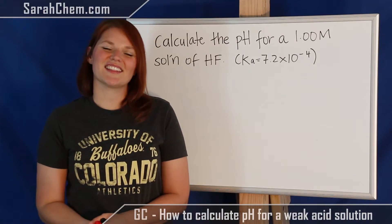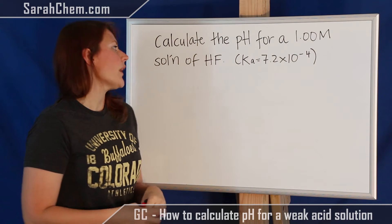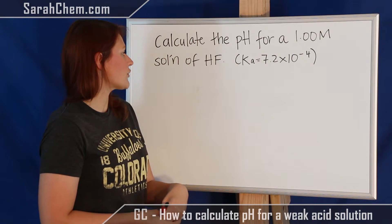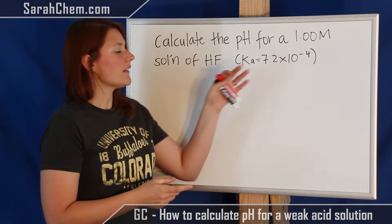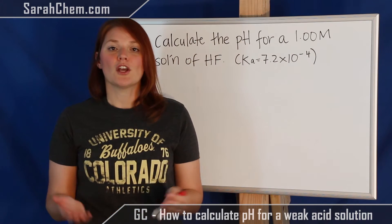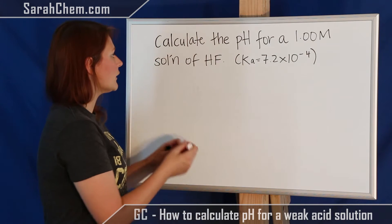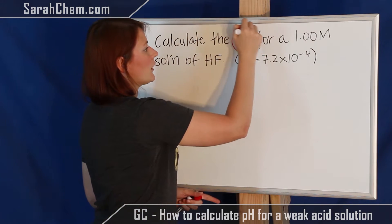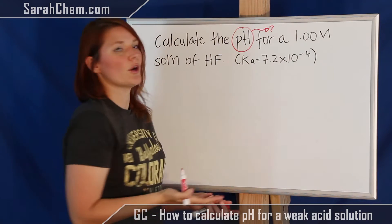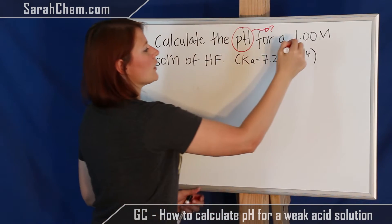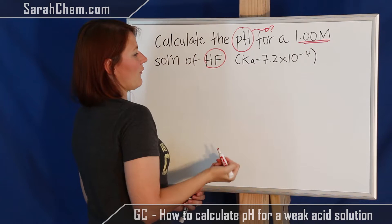Okay, so let's take a look at this calculation. If we read the question, it says calculate the pH for a 1.00 M solution of hydrofluoric acid, and then we're also given a Ka value. So first we want to pull out the relevant pieces of information. We're told that we're looking for the pH, so it's always good to know what's my goal. We're also told that we have a 1.00 M solution of HF.